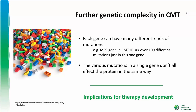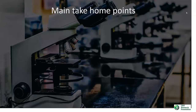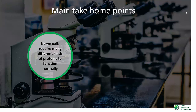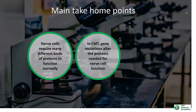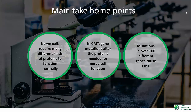There are three main take-home points from today's webinar. First, nerve cells require many different kinds of proteins to function normally. In CMT, gene mutations alter the proteins needed for nerve cell function. And finally, mutations in over 100 different genes cause CMT, which means that a one-size-fits-all therapy won't work for CMT. I hope you'll tune in for other webinars in the CMT Research Foundation's CMT 101 series. In the next part of the series, I'll discuss therapy development for CMT.